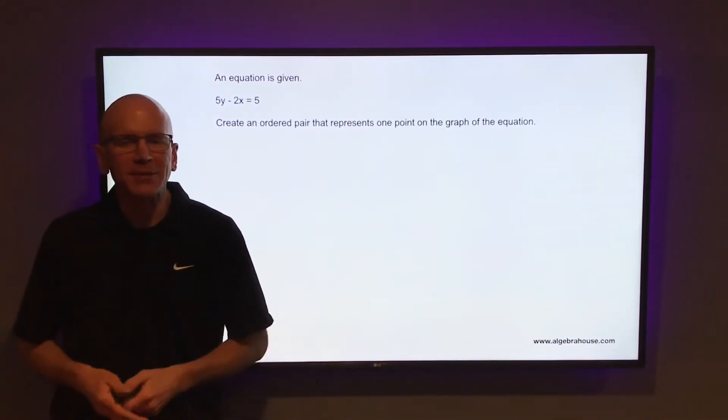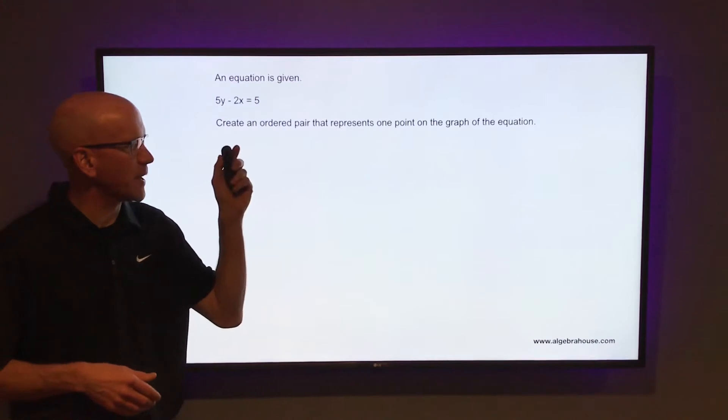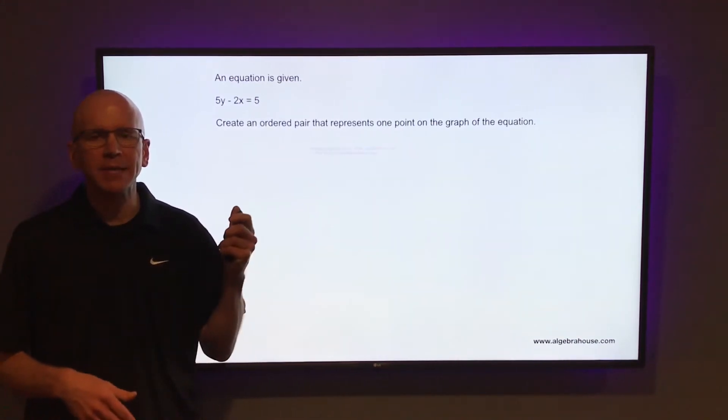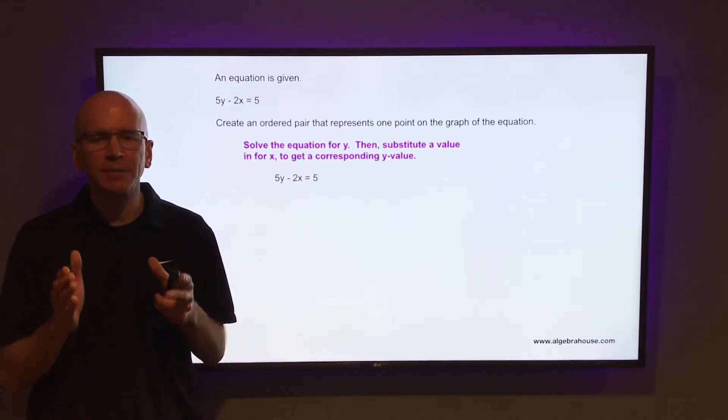An equation is given: 5y - 2x = 5. Create an ordered pair that represents one point on the graph of that equation. So we're going to take that equation and solve it for y.